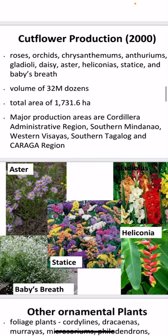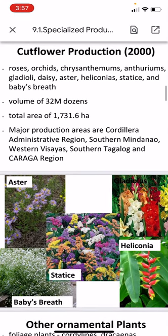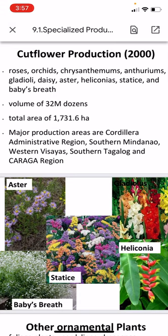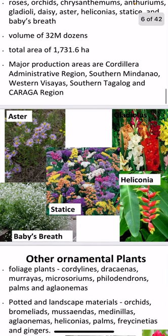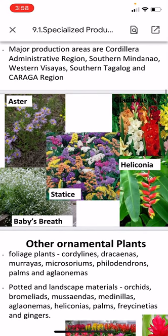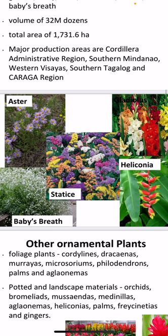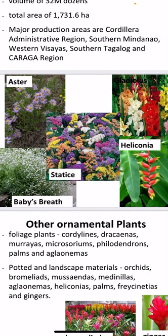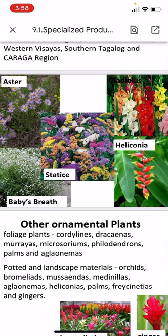Cut flower production as of 2000 includes roses, orchids, chrysanthemums, anthuriums, gladiolus, daisy, aster, heliconia, statice, and baby's breath. It has a volume of about 32 million dozens with a total area of 1,731.6 hectares. The major production areas are found in Cordillera Administrative Region, Southern Mindanao, Western Visayas, Southern Tagalog, and Caraga Region.